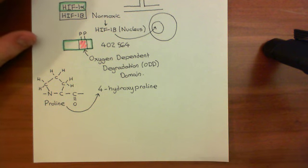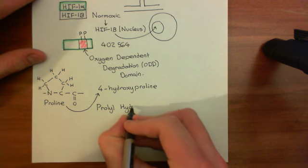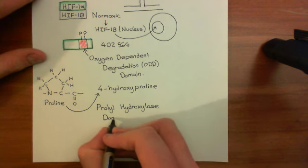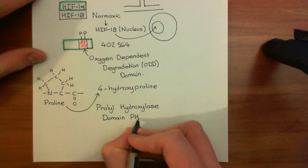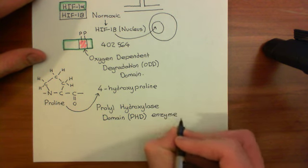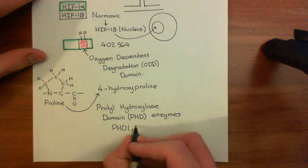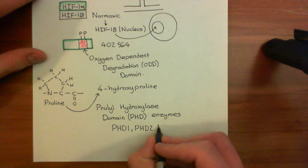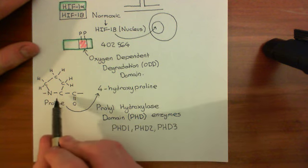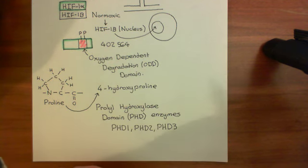There are three members of this family: PHD1, PHD2, and PHD3. All of these enzymes catalyze the reaction converting proline to 4-hydroxyproline — specifically at positions 402 and 564 of HIF-1 alpha.